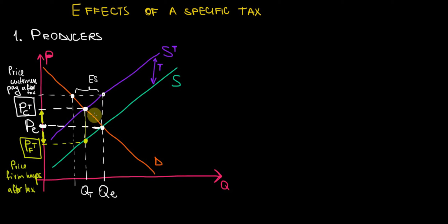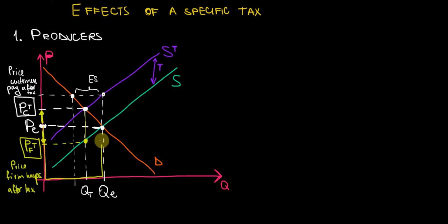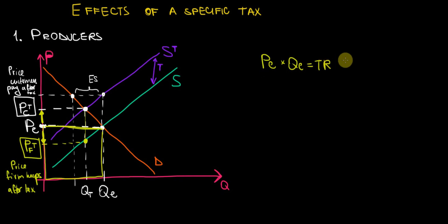Before the tax, the firm was making the rectangle represented by price in equilibrium times quantity in equilibrium — highlighted in yellow. This was the total revenue of the firms before tax: price equilibrium times quantity in equilibrium, forming this yellow rectangle.